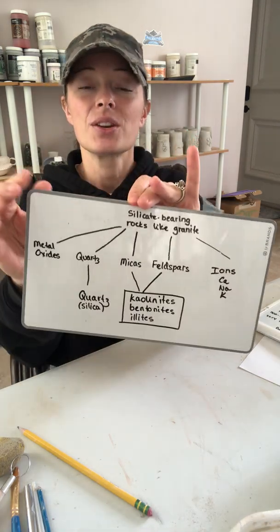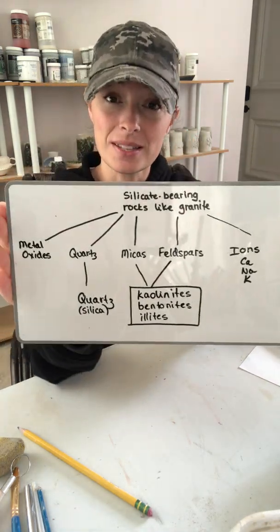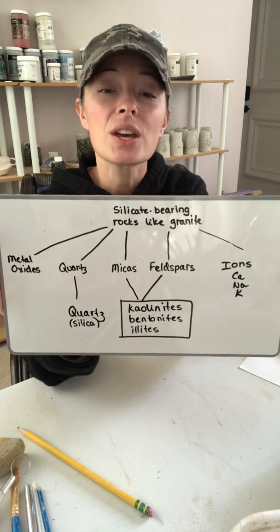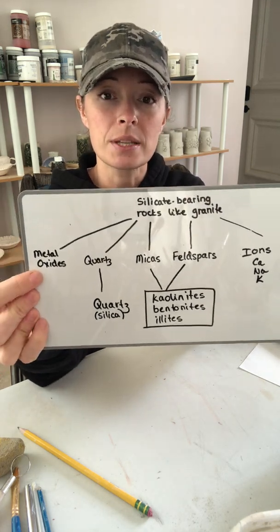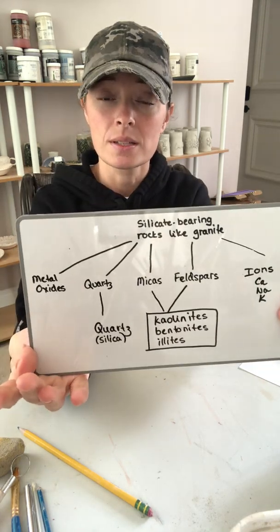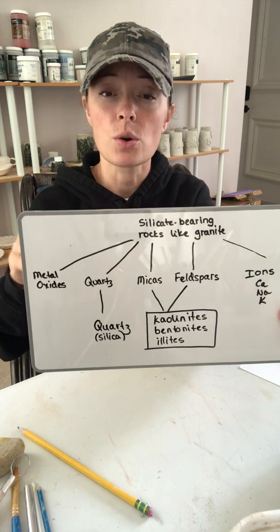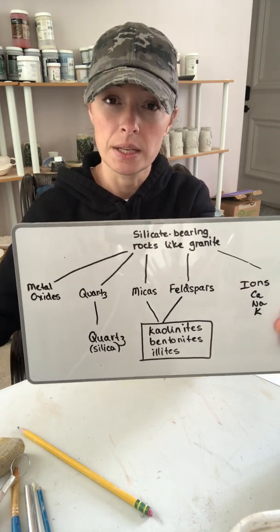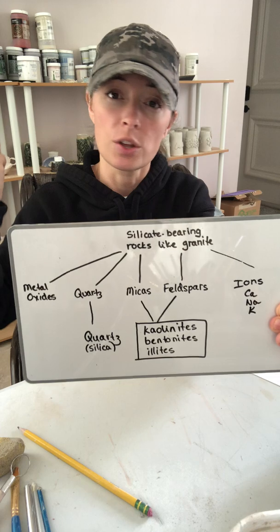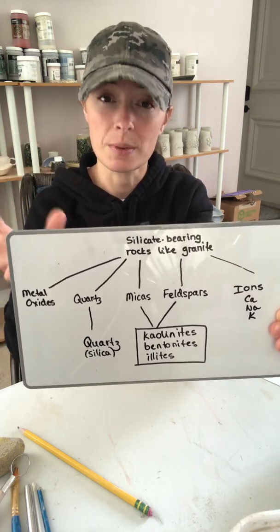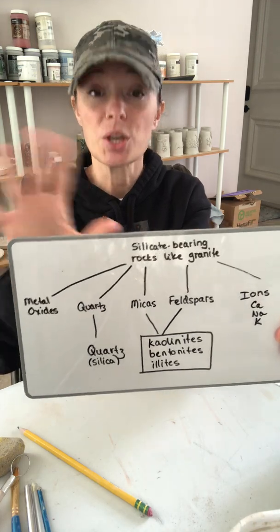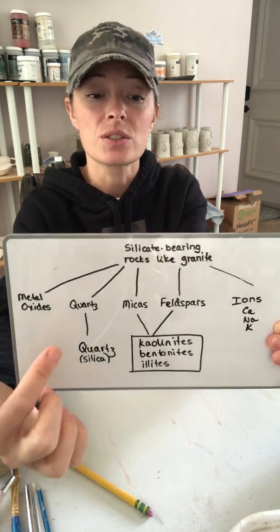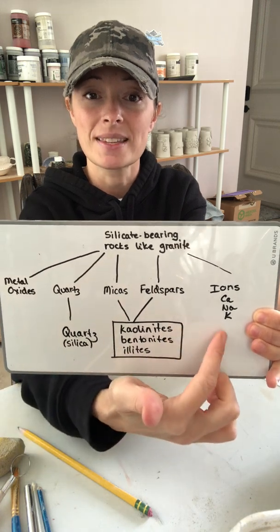So where does clay come from? You start out with a rock on a mountain — something like granite, anything that has silicates in it. It will decompose into metal oxides. Why does it decompose? Because it comes from deep inside the earth. The chemicals that are stable deep underground with heat and pressure, when they surface they're no longer stable and they decompose to become stable again. So they decompose into metal oxides, quartz, the micas, the feldspars, and ions.